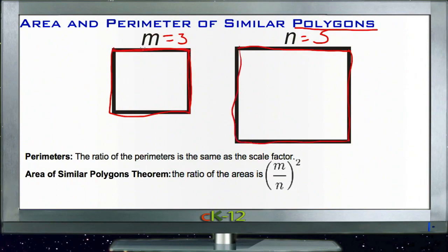So if we were to measure, say, the perimeter of the M figure here, we'd have three, six, nine, 12 units. And if we measure the big one, we'd have five, 10, 15, 20 units.